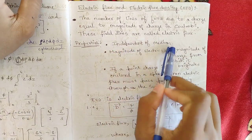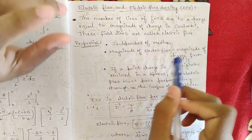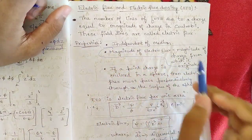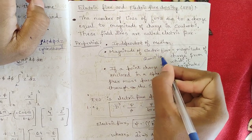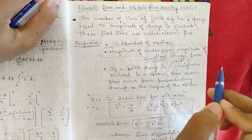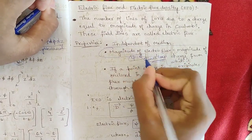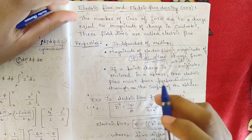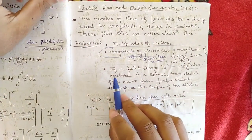The magnitude of electric flux is equal to the magnitude of the charge from which it originates. This relation is equivalently called Gauss's law, which we are going to study in module 2, where the relationship between electric flux and charge is discussed in detail. It is given by phi equals Q.